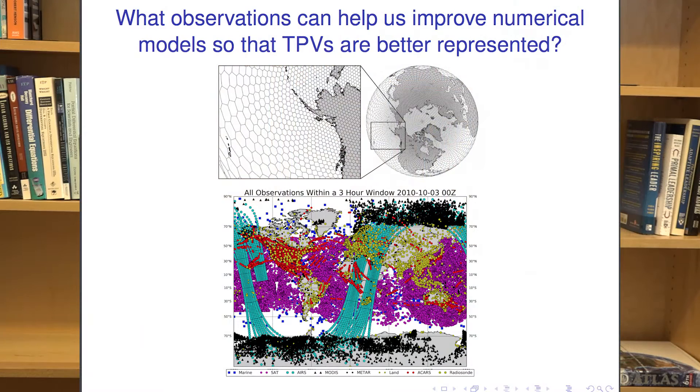Ultimately it comes back to: if TPVs and jet streaks are important, I want to go back as far as possible to understand how these TPVs are evolving, and we don't have a good understanding of what's making them as strong as they are or moving the way they do before they get here. To do that we focus on global modeling and high-resolution modeling, because we need that large domain to predict their movement all the way from the Arctic into the mid-latitudes or sometimes across an ocean. We also need observations — there are fewer weather stations in the Arctic, and especially at the tropopause level we don't have much data to tell us what these TPVs look like.